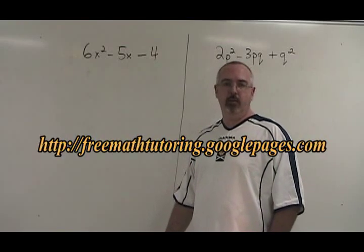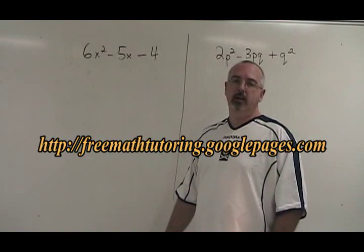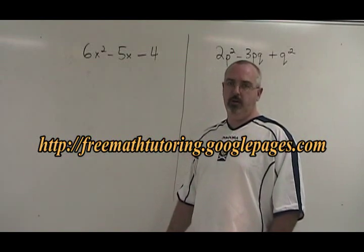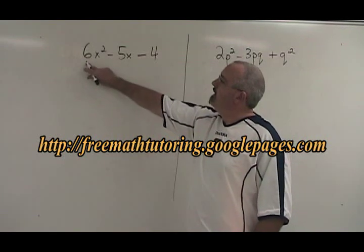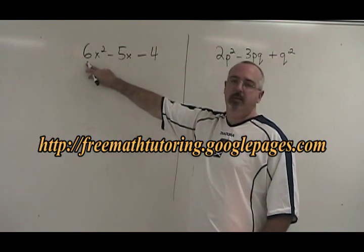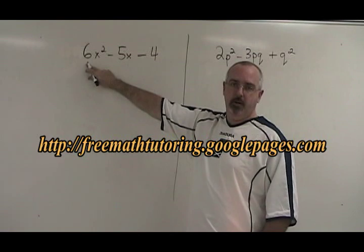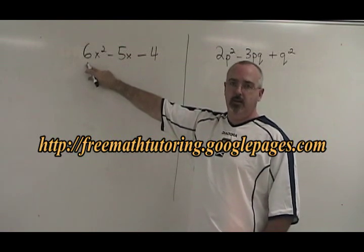The fifth and last of the factoring methods I will teach is what I call complex trinomial. The difference between these and a simple trinomial is that the numerical coefficient of the first term is not one, it's some other number. This can still be factored, but the method changes a little bit.